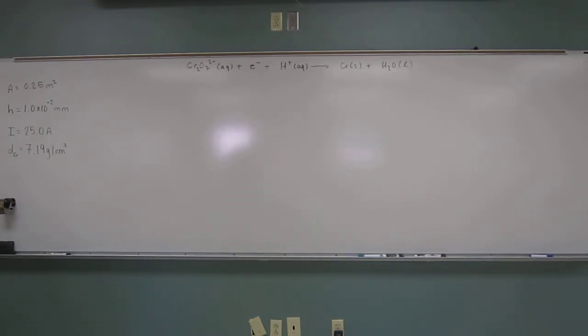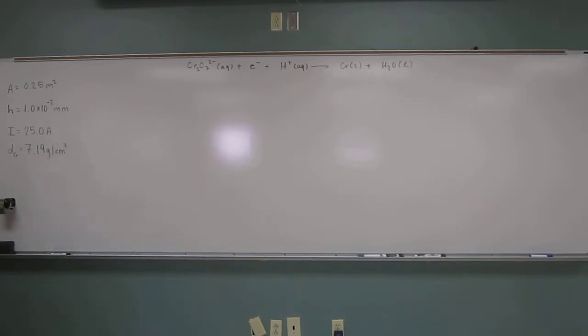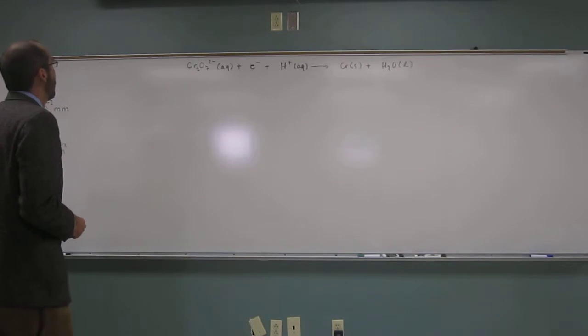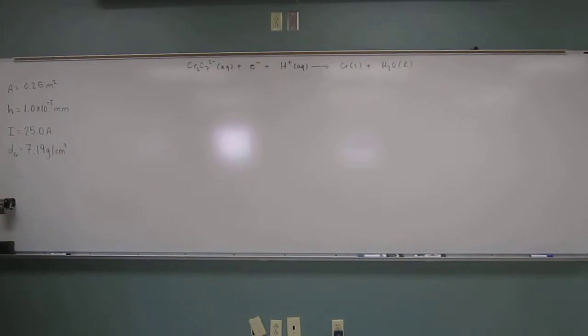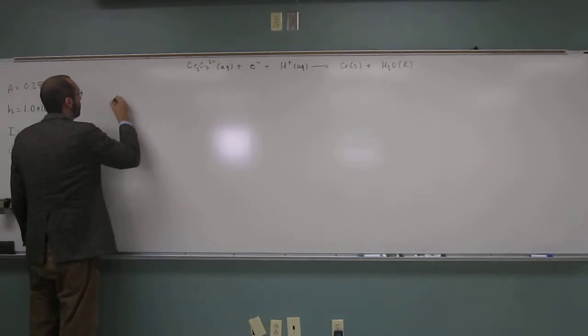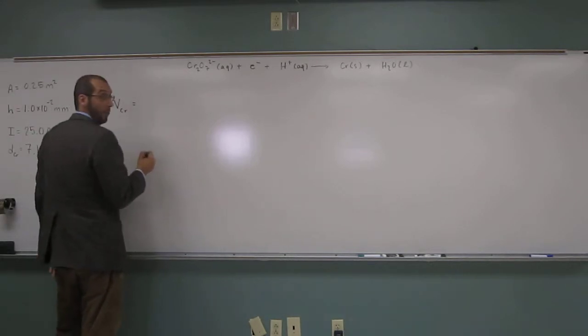I think I've written all the pertinent information up here. I think the best thing to do, you can approach this problem from a number of different ways, but I think the way I'm going to do it is to figure out the number of moles of chromium that we've got first. So how am I going to do that? Well, I've got an area of chromium and a height of chromium, so I can figure out what the volume of chromium is. I'm going to do that in meters.